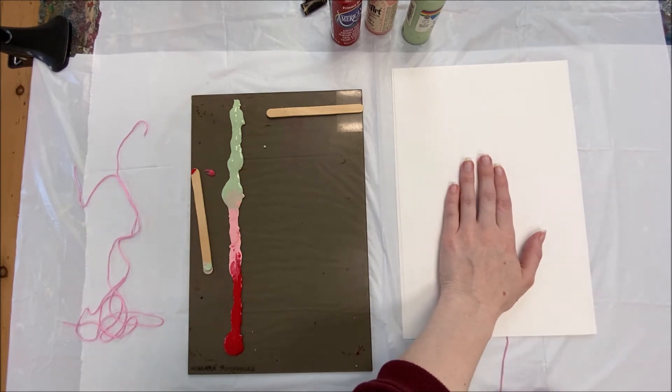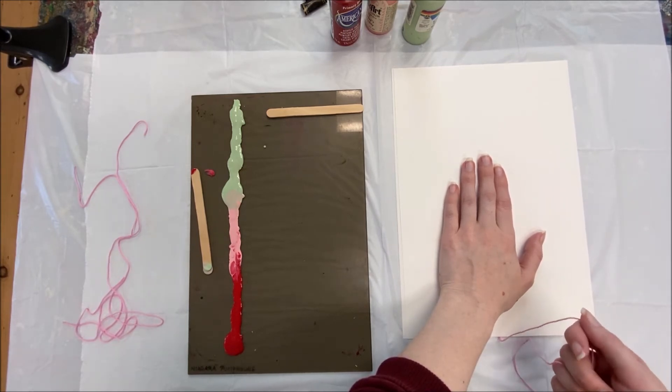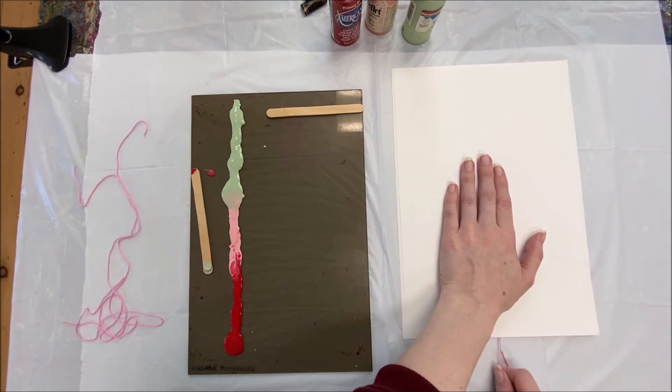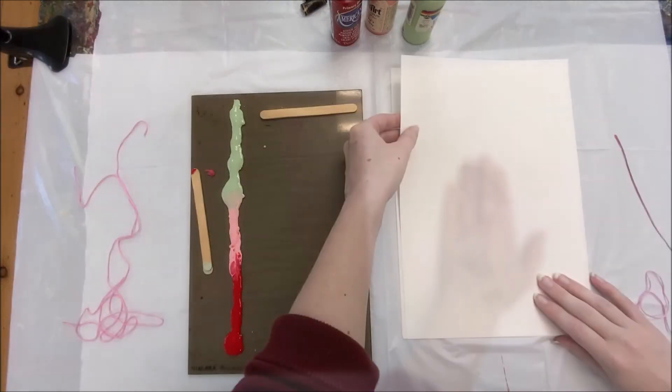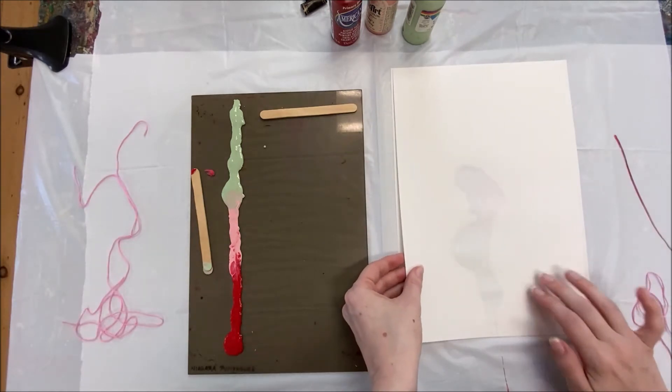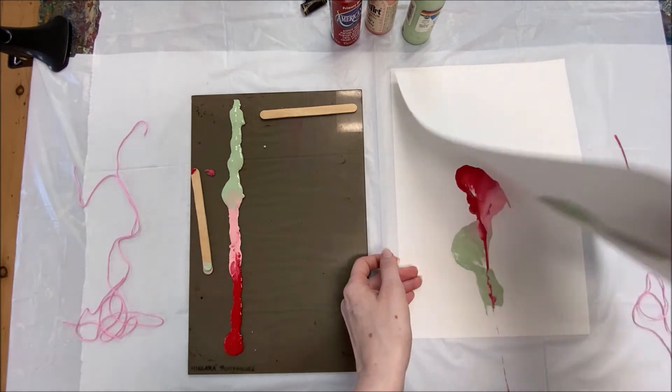Now, again, very gently, we're going to take this part of the string and pull the end of the string all the way out. When we lift up our paper, you'll see we have our first flower.